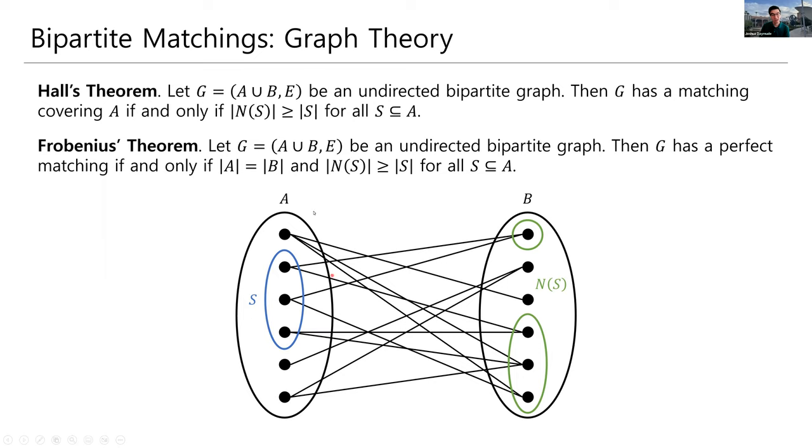So, if G has a matching covering A, then to get a perfect matching, we just also need a matching that covers B, and, of course, that's going to be true if they have the same size. So, Frobenius' theorem does not really have a proof of its own. It's simply Hall's theorem in a special case.